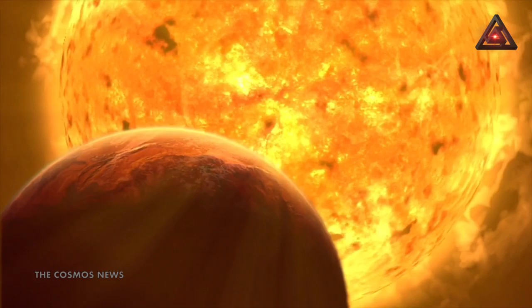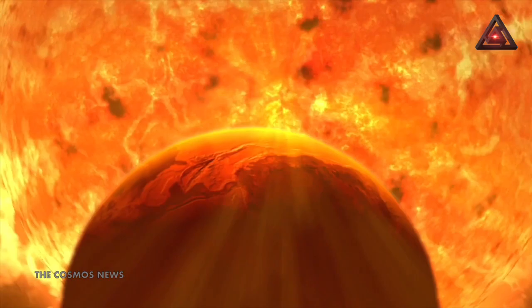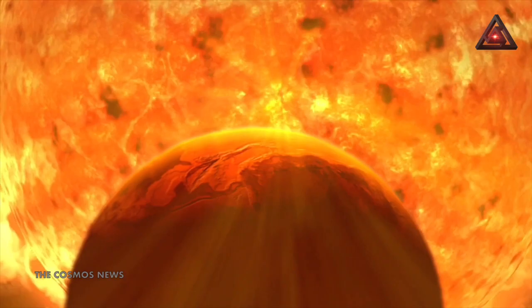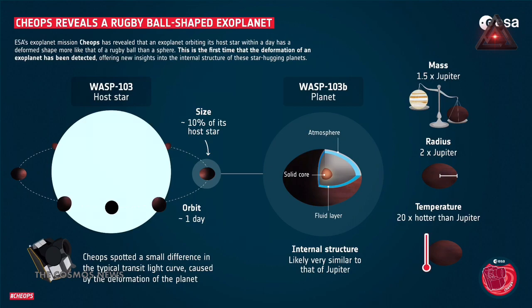Dubbed WASP-103b, the planet appears to be deformed due to enormous tidal forces caused by its host star. Much like how the moon's gravity pulls on Earth, WASP-103b's host star is so close to the planet that it exerts a staggering tidal force. This has resulted in the planet taking on a rugby ball shape, and tantalizingly, it's the first time such a deformity has been detected in an exoplanet.